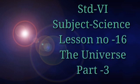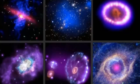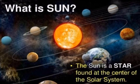Standard 6 Subject Science, Lesson number 16: The Universe, Part 3. In our previous video we had studied about types of galaxies and stars. There are many different sizes and colors of stars. Star colors relate to how hot a star is. Red stars are the coolest, while orange and yellow, white, or blue-white stars are the hottest.